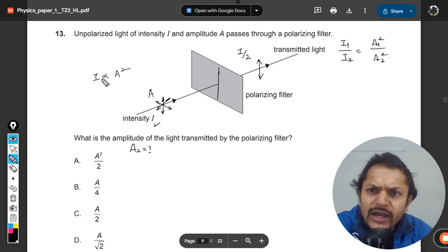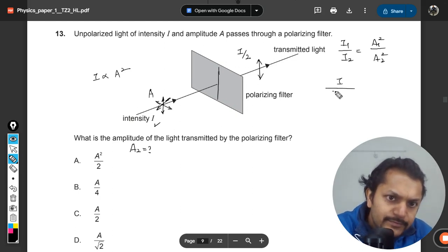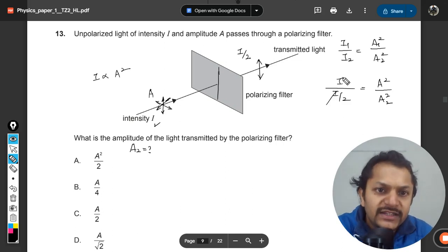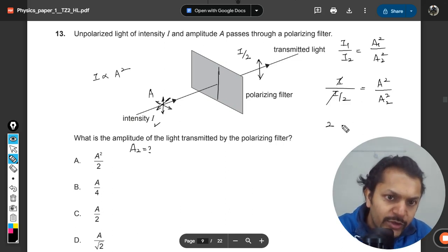So I₁ here is I and I₂ is I by 2. And here the amplitude is A, but this amplitude which is A₂ is a variable we want to find. Now this and this get cancelled out. 2 will go into the numerator, so this will be 2 divided by A₂ square.